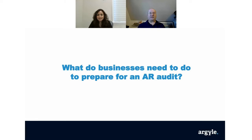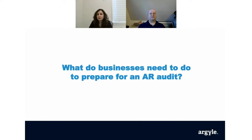What do businesses need to do to prepare for an AR audit? AP is when you pay out; AR is when you receive. Accuracy and documentation are again quite important. On the AR side, make sure your invoices are accurate and they match your sales transactions. Having two-way and three-way matching helps ensure there is no inaccuracy in your documentation and recording.